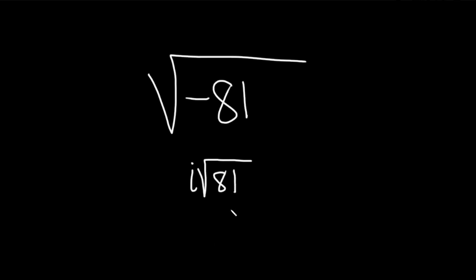Then you ask yourself, what is the square root of 81? This is equal to i times the square root of 81, which is 9.